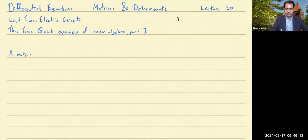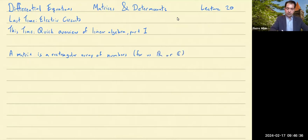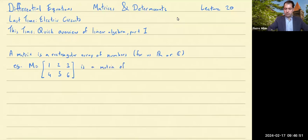A matrix is a rectangular array of numbers — for us, that means either real numbers or complex numbers. For example, the matrix M given by 1, 2, 3, 4, 5, 6 is a matrix of size 2 by 3. This 2 by 3 doesn't mean 2 times 3, so you don't say this is a matrix of size 6. You keep the two numbers separate — just 2 by 3.